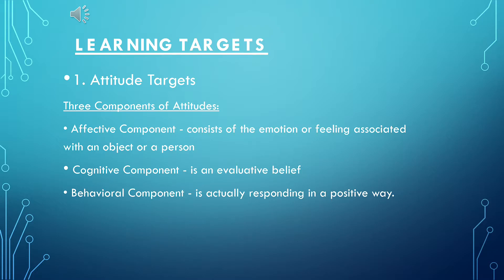In a learning institution, attitude is contingent on subjects, teachers, other students, homework, and objects or persons. There is a positive attitude and a negative attitude. A positive attitude in learning includes, for example, doing well in math, science, English, and other subjects, doing assignments, following classroom rules, and respecting teachers. A negative attitude includes, for example, cheating, bullying, cutting classes, and dropping out.